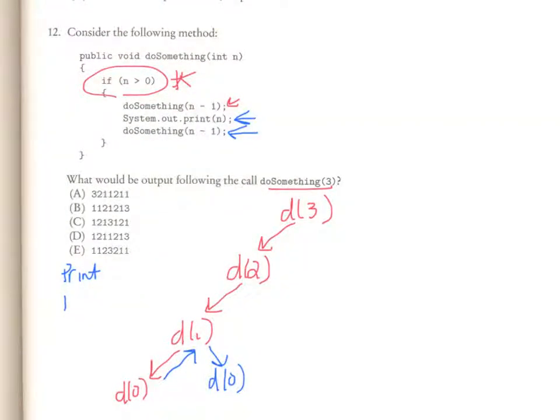And once I encounter this exit scenario, I now leave do something 0. And now, I have finished all of the instructions associated with do something 1. So now, I kick back up to do something 2. And when I get into do something 2, the first thing that I'm supposed to do is finish the lines of code that were waiting. And the lines of code that were waiting were to print n.